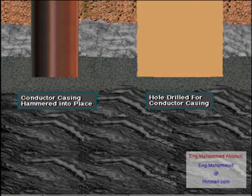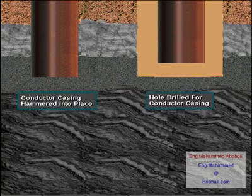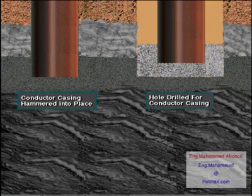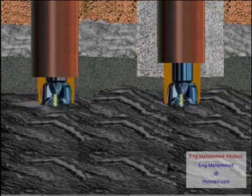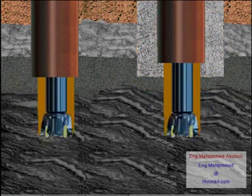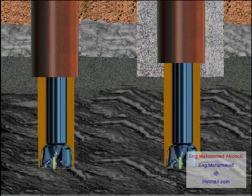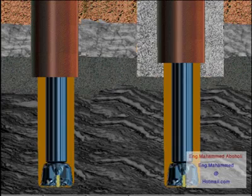In some cases the rig will hammer the conductor casing in place if the ground near the surface is really soft. If the conductor hole is drilled, the casing is set in it. Using a bit whose diameter is small enough to easily go inside the conductor casing, the rig drills the hole below the conductor to a prescribed depth.